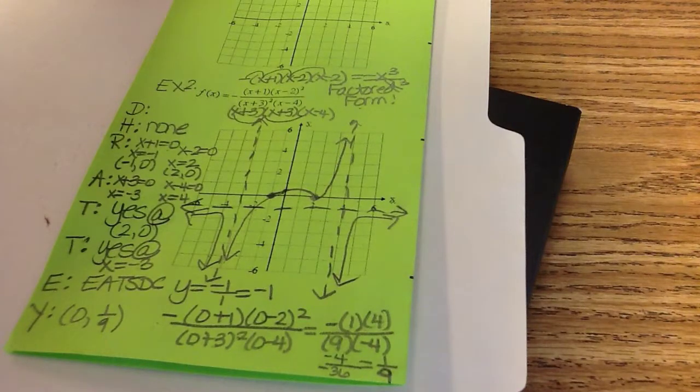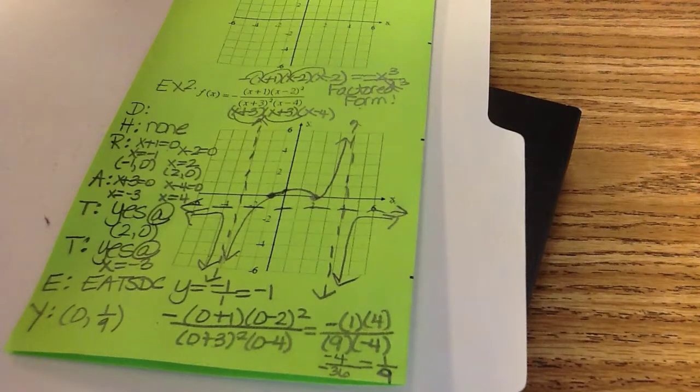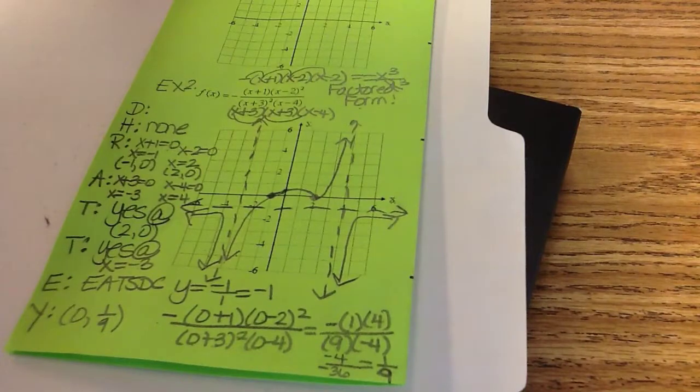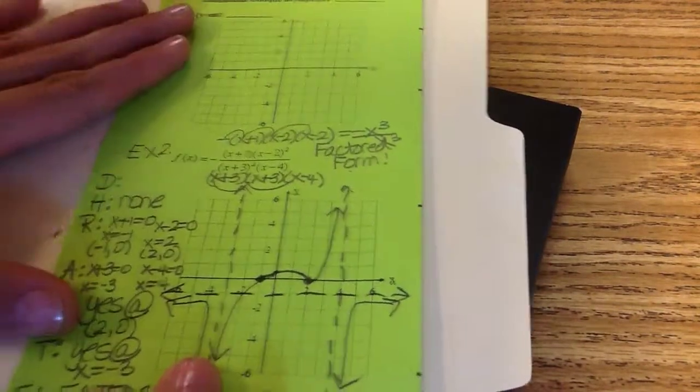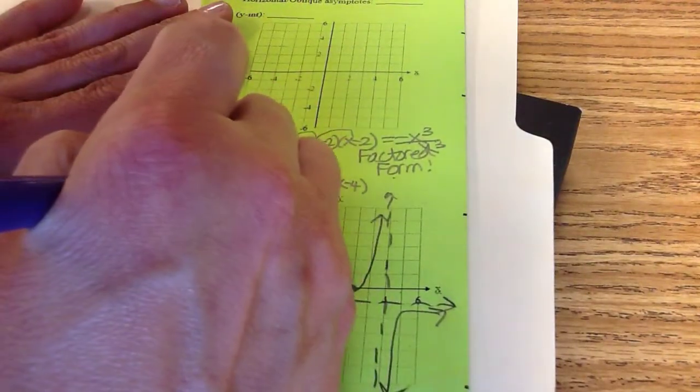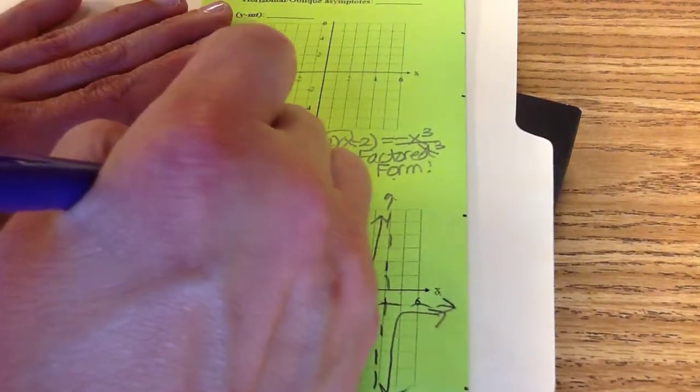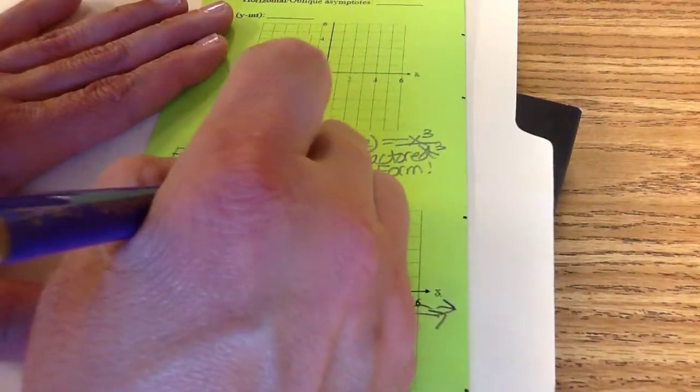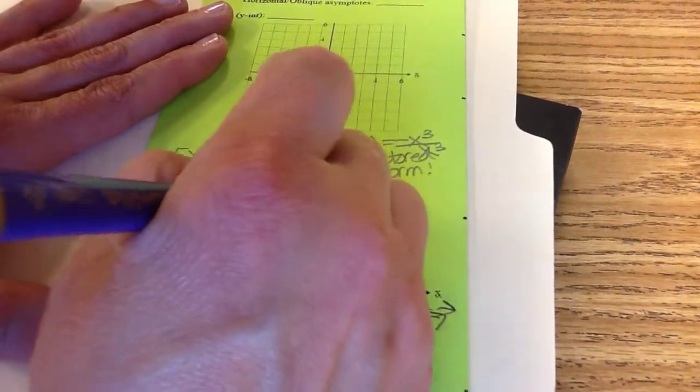So that's example two. Factored form. You don't have to factor. Just do all of the DHRATTEY stuff. So domain is like it has been. Negative infinity to your vertical asymptote, union vertical asymptote to next vertical asymptote, union vertical asymptote to infinity.